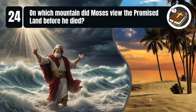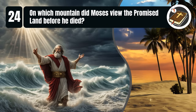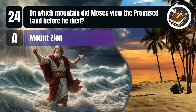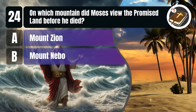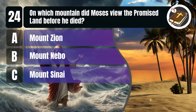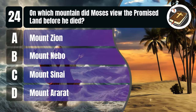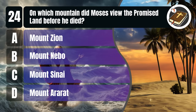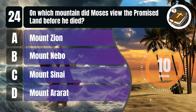Question 24. On which mountain did Moses view the promised land before he died? A. Mount Zion, B. Mount Nebo, C. Mount Sinai, D. Mount Ararat. You get 10 seconds.